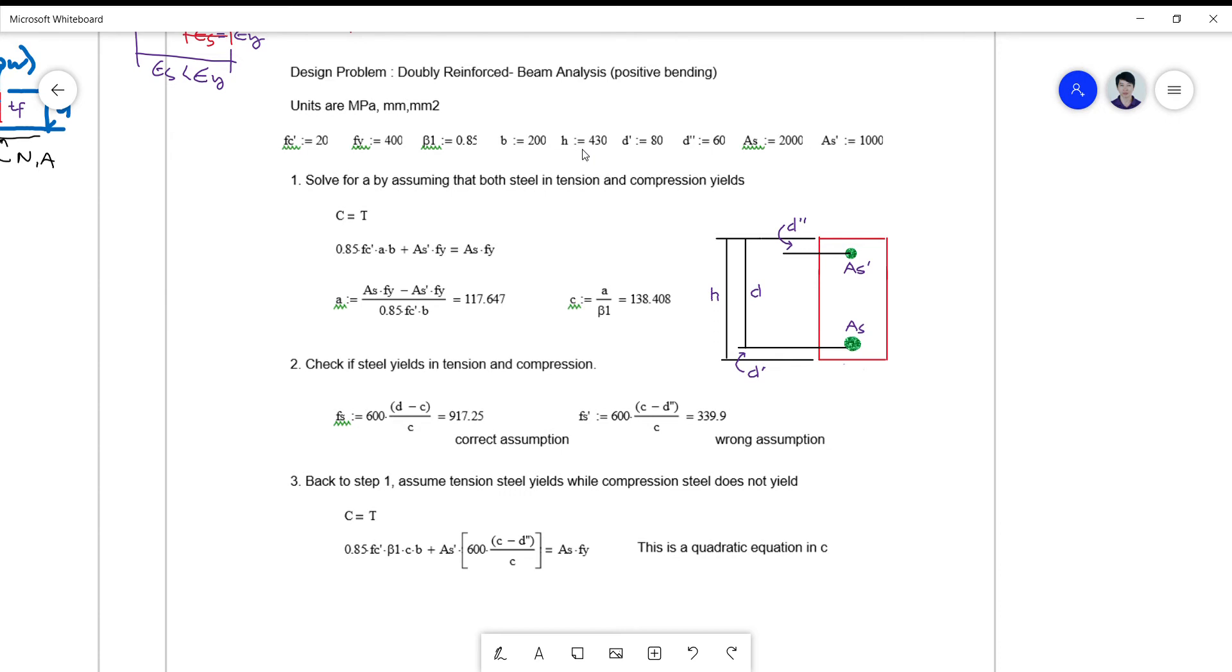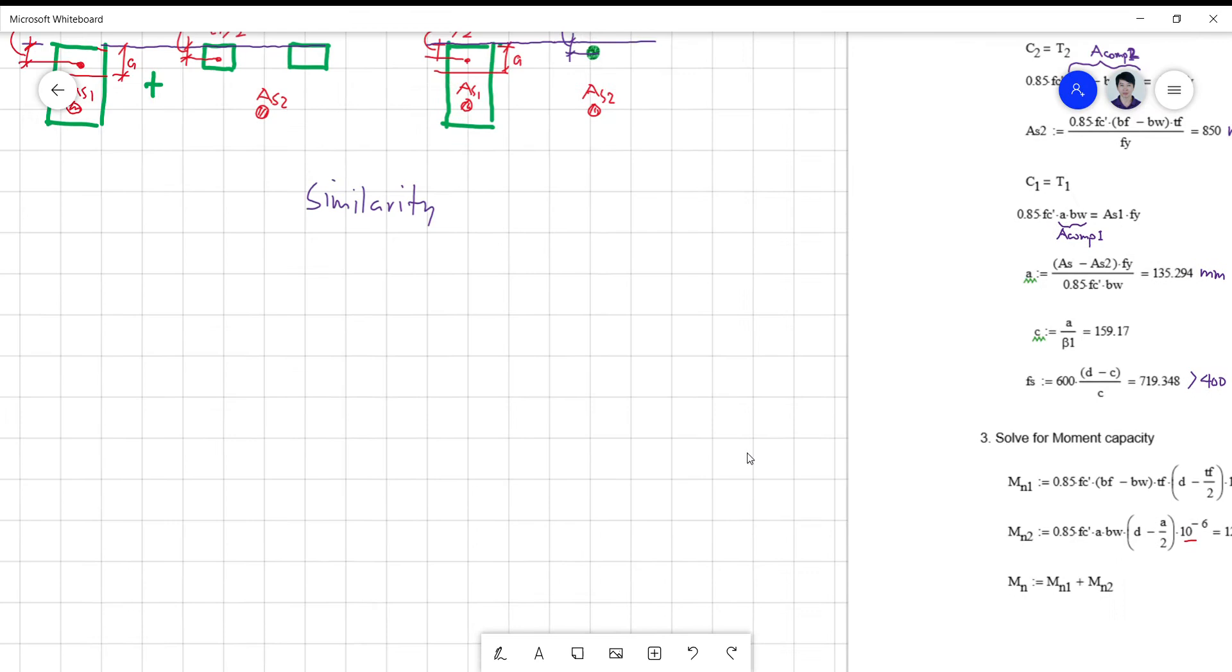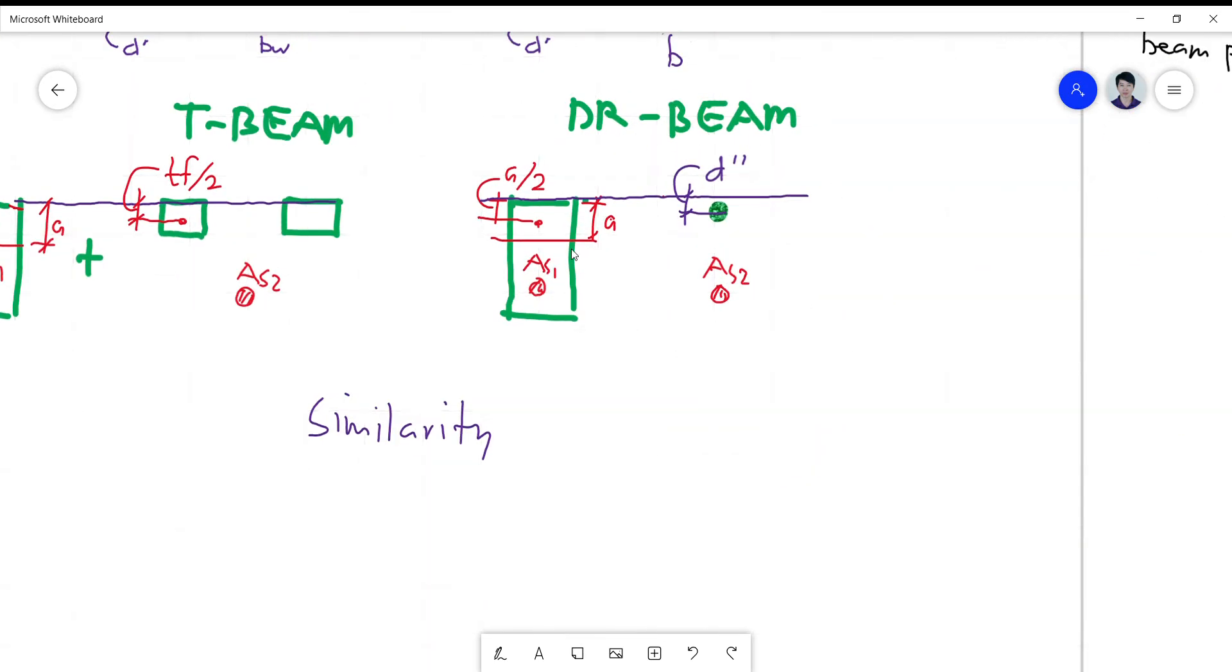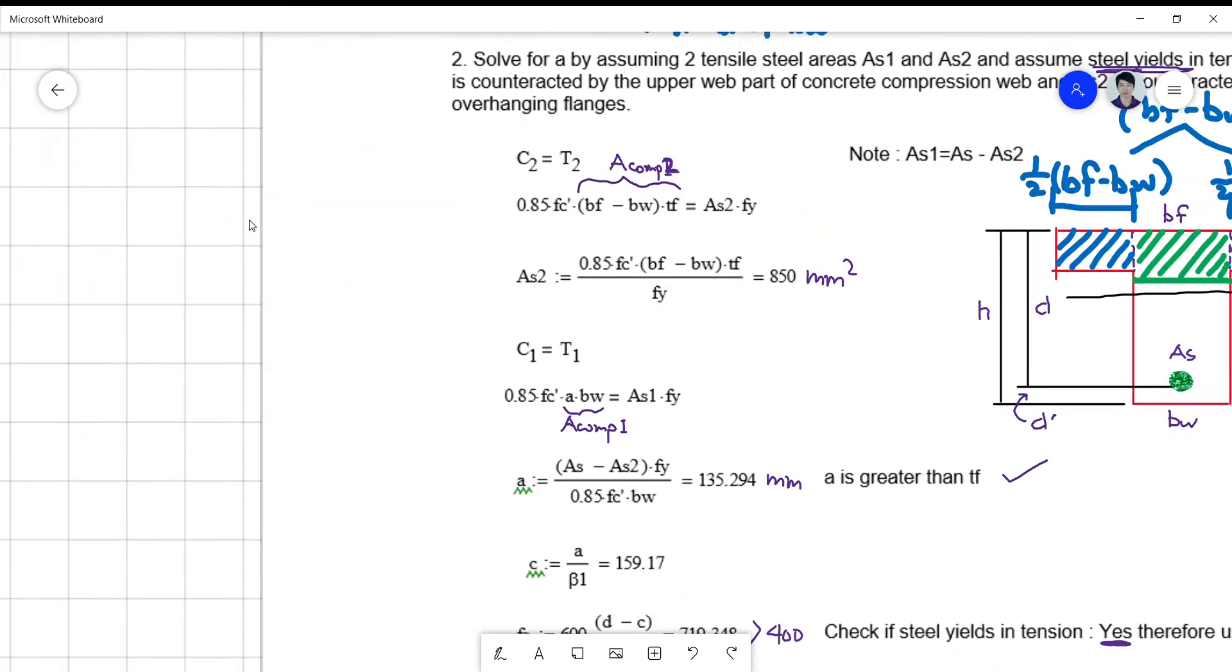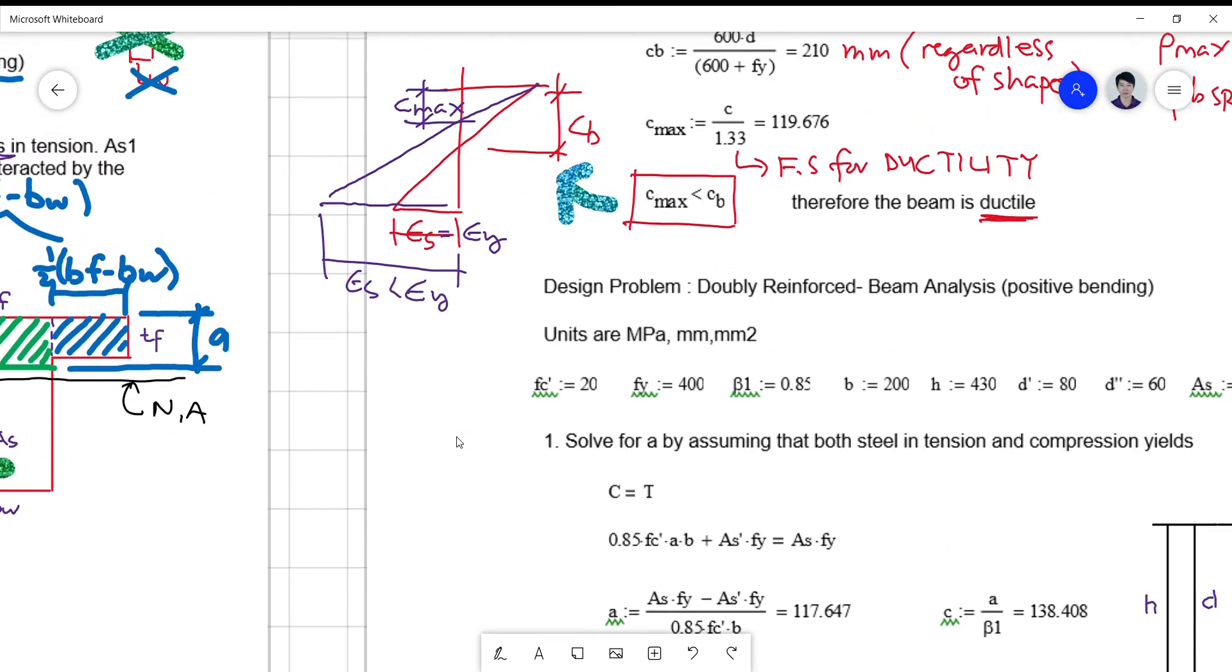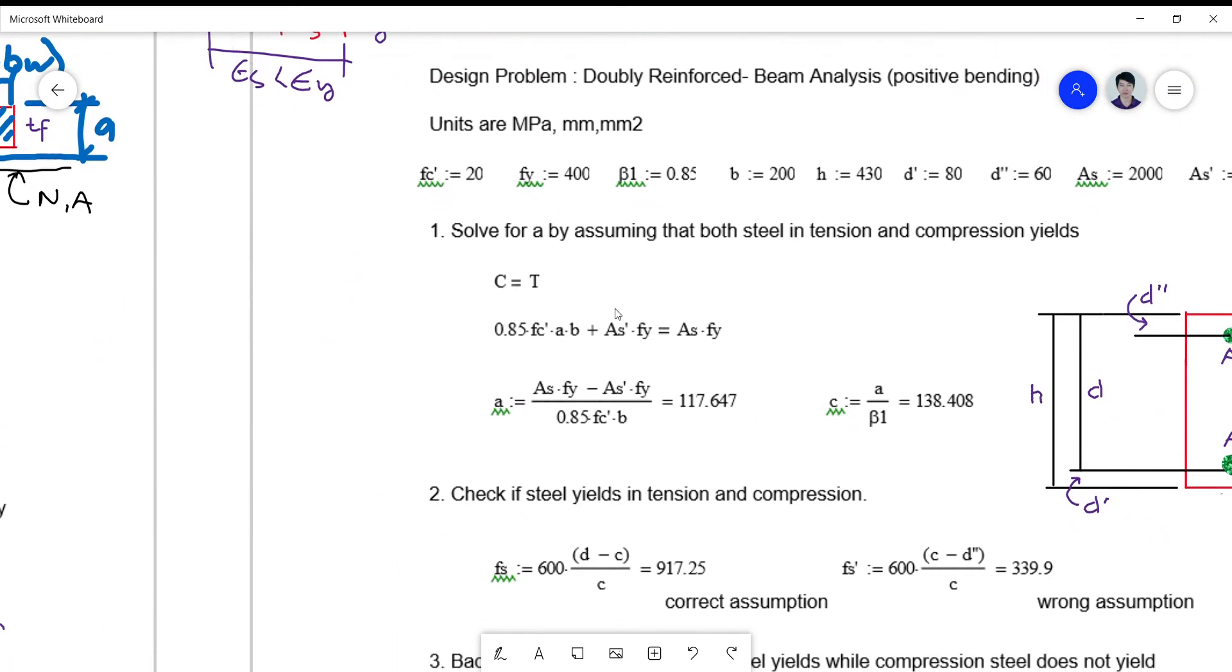To start now with the procedure, we solve for the depth of the stress block A by assuming that both steel in tension and steel in compression have yielded, so C equals to T. Basically, this can be divided into two areas - on my first video I showed you that it can be divided into two areas: the compression concrete here with the depth A and the AS1, and the other is the AS prime given with the AS2.